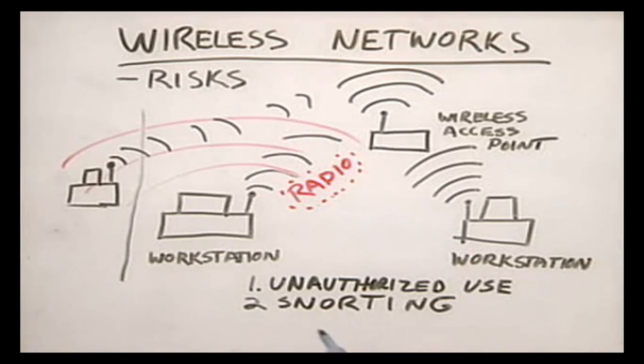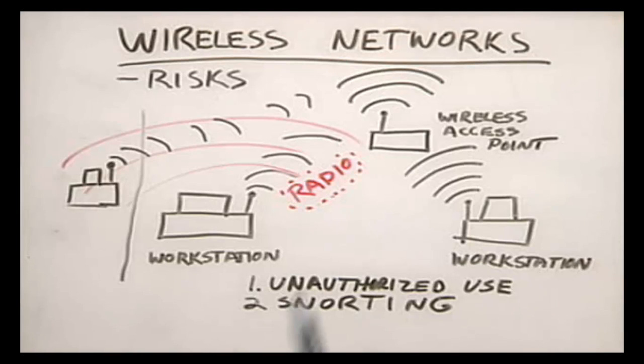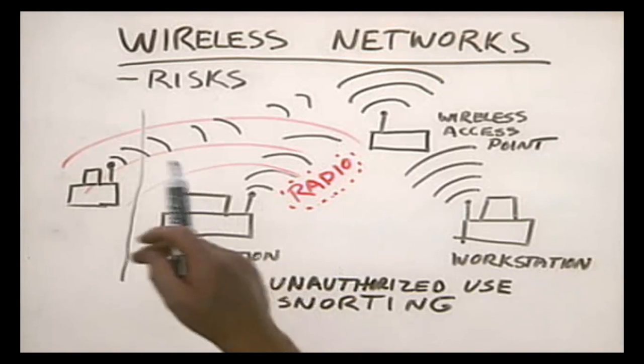Snorting captures data — some of which you may not want captured — including usernames, passwords, credit card numbers, banking numbers, and sensitive financial information. Does this mean a wireless network is insecure and you should never use it? Not necessarily. Yes, it is insecure if you don't configure it correctly, but if you do configure it correctly, it is reasonably secure enough for most organizations to use.